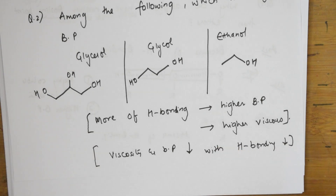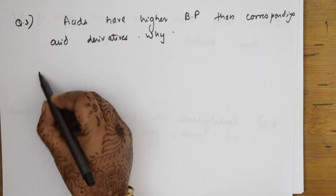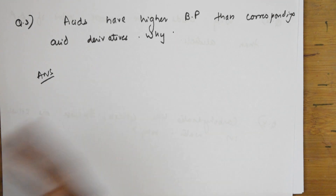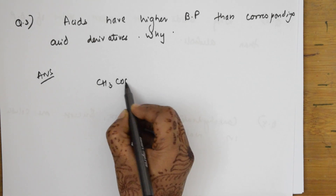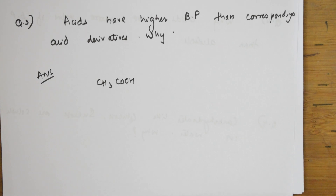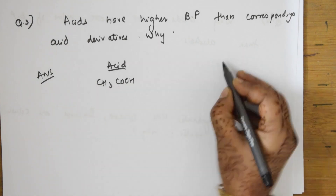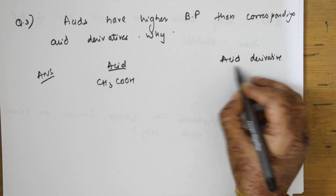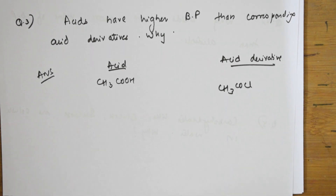Next question: why do acids have a higher boiling point than corresponding acid derivatives? Let us take acetic acid as our example. The acid derivative would be CH3COCl (acetyl chloride). Let us draw and compare the structures of acetic acid and its derivative.